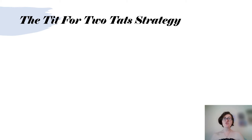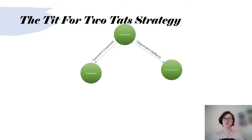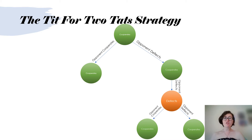Another strategy to come out of this is called the tit for two tats strategy. In this strategy, the program will always cooperate unless the opponent defects twice in a row, in which case the program will defect once and then return to cooperation regardless of what the opponent picks. This is often referred to as the nicer strategy, given the fact that it will always cooperate unless its opponent betrays twice.